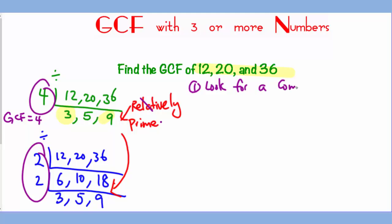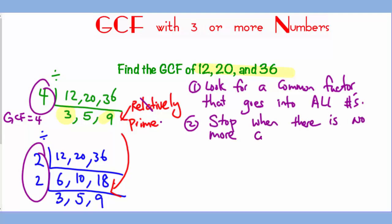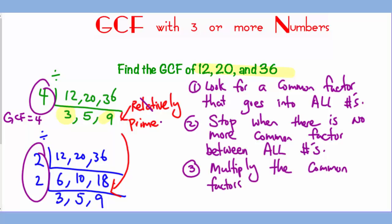To recap, the first thing you should do is to look for a common factor that goes into all numbers. And you will stop when there's no more common factor amongst all numbers. To get the greatest common factor, you combine the common factors on the left side together to get the biggest.